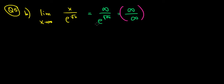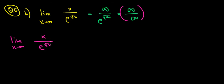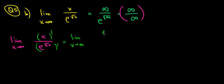We will have to use L'Hôpital's Rule, meaning we take the limit x approaching infinity and take the derivative of each side — the numerator x and the denominator e to the power square root of x. Let's take the derivative of the numerator and the denominator. We have the limit x approaching infinity. We have 1 over — what is the derivative of e to the power square root of x?